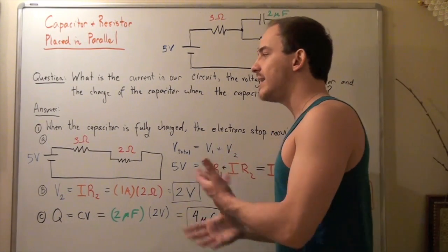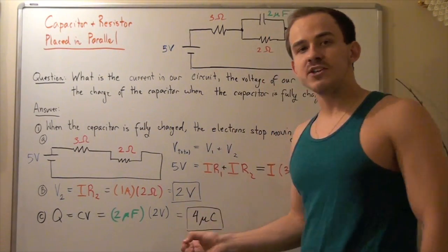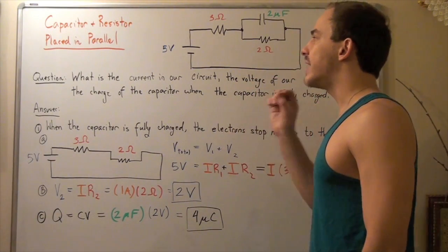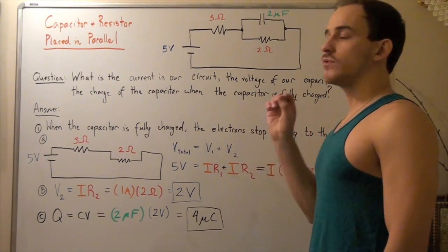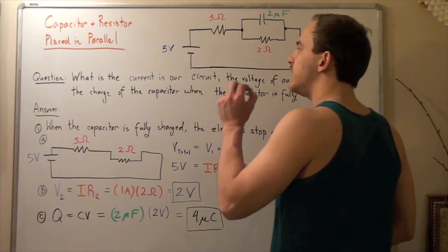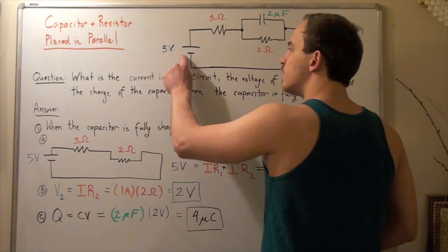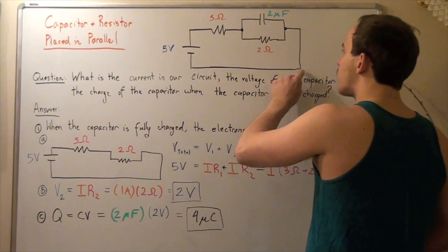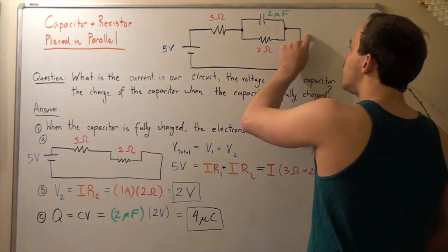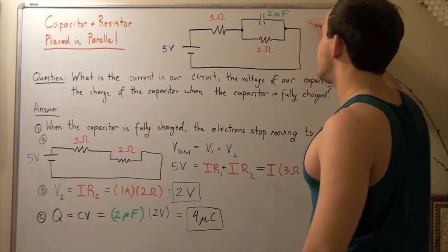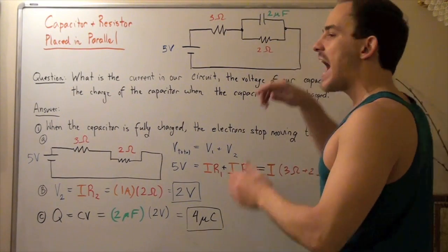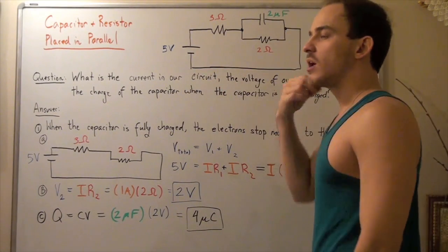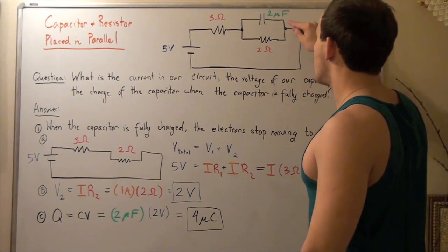Before we look at any of our calculations, let's think this through. What happens when our electrons begin to flow? When our electrons begin to flow from our anode to our cathode, they begin to move in this direction. And when they get to this node — this intersection — our current splits. So some of the electrons go this way, and some of the electrons go this way.